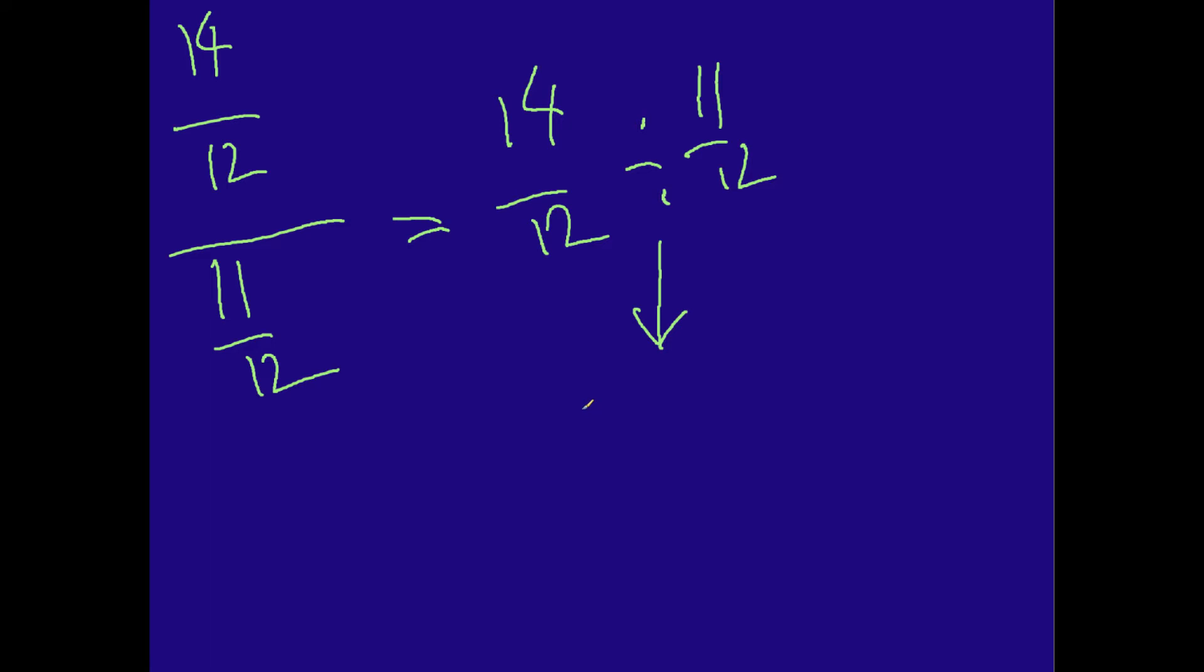Now, again, when you're dividing rational expressions, what you do when you want to work out the division is you find the reciprocal of the second value, the one to the right of the division sign, and then you can multiply across. So it'll become this, this is important. 14 over 12 multiplied by 12 over 11. That's what we get there.